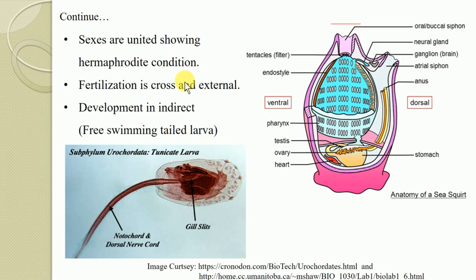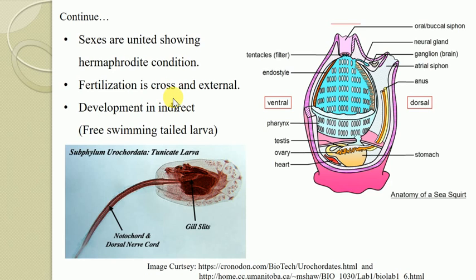Fertilization is cross and external. External fertilization means the fusion of gametes takes place outside the body. Cross fertilization means that although they show hermaphrodite condition with both testis and ovaries in the same organism, the gametes of a single individual never participate in reproduction with each other — the sperm of one organism fertilizes the egg of another organism.